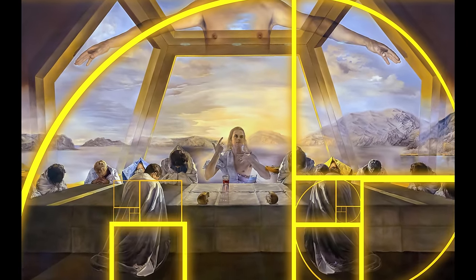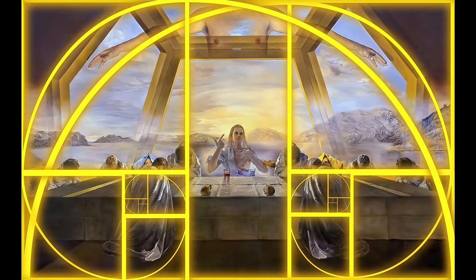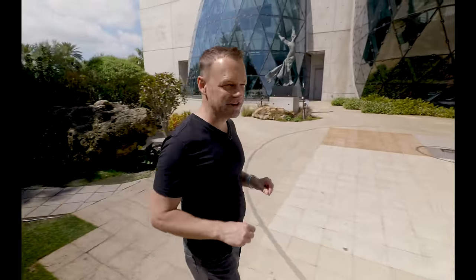You see how the golden spirals create perfect symmetry and move your eye from the subjects at the table to the arms in the sky. Dali was so infatuated with the golden ratio, I had to come down to Tampa, Florida to the Dali Museum so you could see for yourself.